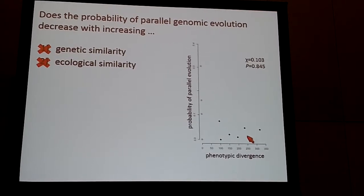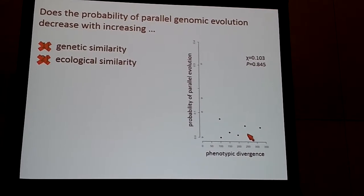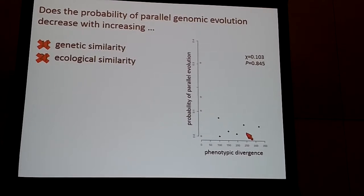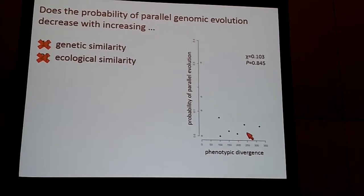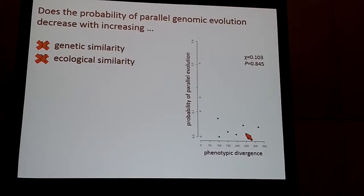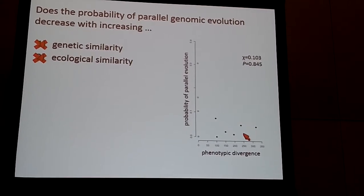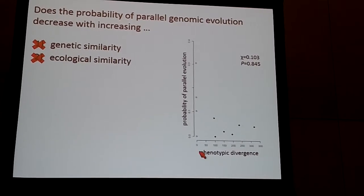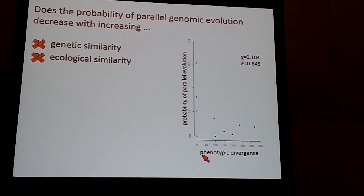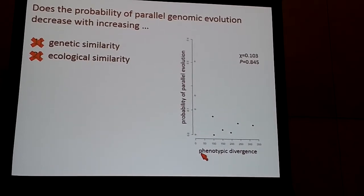We also asked the same question about ecological similarity. Two of these strains have been growing within the human lung for thousands of generations, occupying a really distinct niche. I measured 10 different phenotypic traits and obtained a measure of phenotypic divergence — and again, there's no correlation between phenotypic divergence and the probability of parallel evolution.